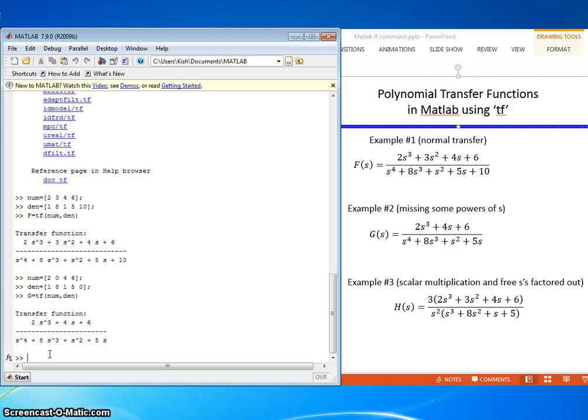So for scalar multiplication, we can just simply multiply the entire numerator array, or vector, by the scalar. So in this case, let's go num equals 3 times, and then just put the coefficients in as we see them 2, 3, 4, and 6.